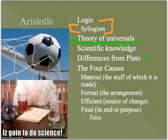This leads to his differences from Plato. Plato would say that the essence of apple-ness exists out in what he calls the forms — outside of time and space. But Aristotle, being the scientist, says the essence of something exists in and of itself. So the essence of an apple is in the apple, while Plato said it's a concept existing outside of time and space. Aristotle is very much into scientific knowledge.